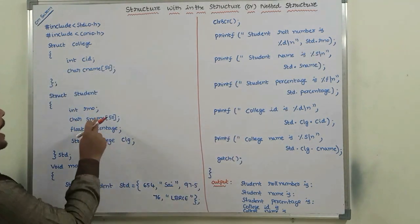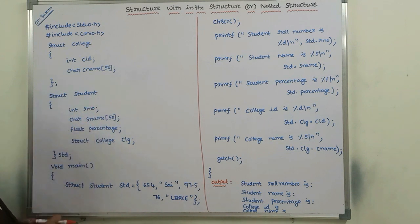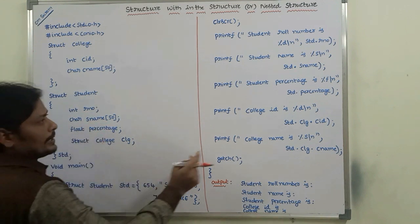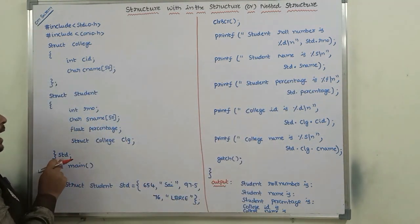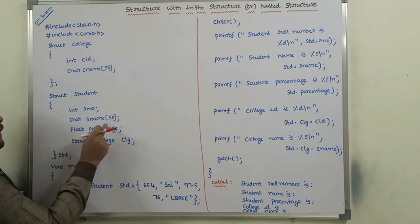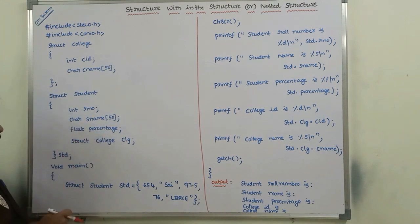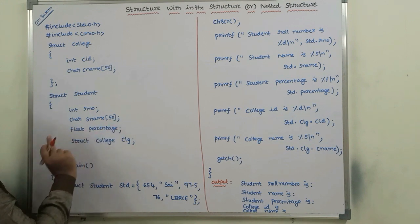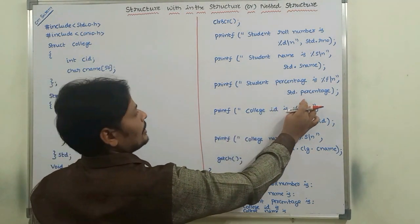To access the student name, we use structure variable dot member name: std.sname. To access the structure member percentage: std.percentage.